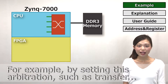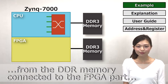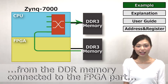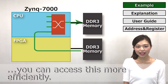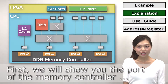For example, by setting this arbitration, such as transfer from the DDR memory connected to the FPGA part to the DDR memory connected to the CPU part, you can execute this more efficiently.